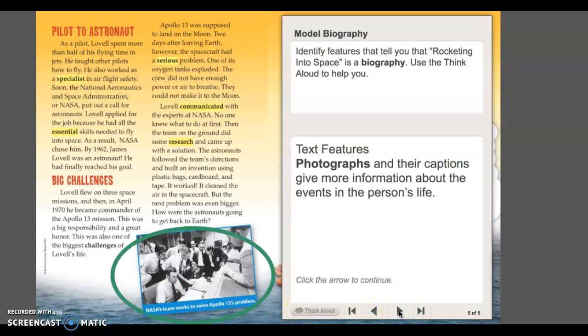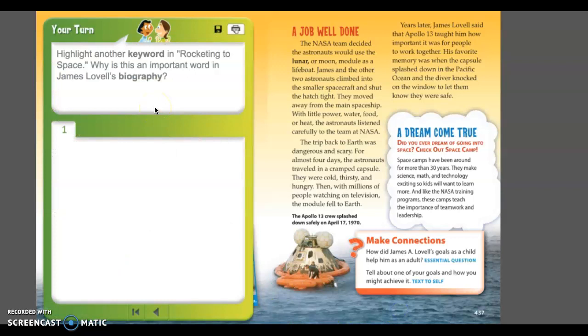So we have a photograph here. Another feature that makes it a biography, nonfiction with a caption included. Now let's practice. It says highlight another keyword from this page here. Keyword meaning a word in bold, dark type from this page. And help me to type it. What do you see? Oh, I see this word lunar. So I'm going to type lunar here. Lunar is a bold word. And I know lunar means moon because there's a comma after it. And it says the NASA team decided the astronauts would use a lunar or moon module as a lifeboat. So again, keywords are bold words. We've got a photograph with a caption here and then heading. So let's look at our passage for today and practice genre.